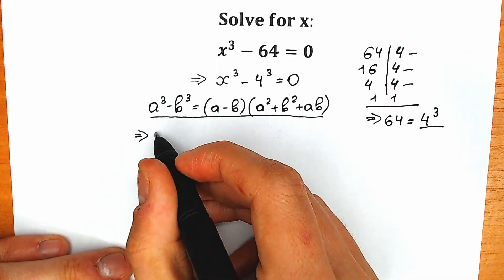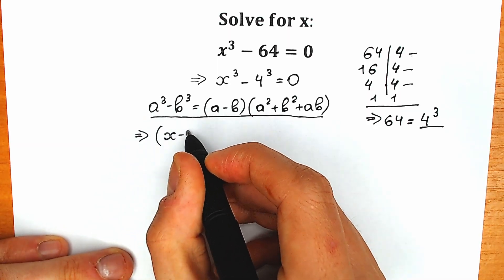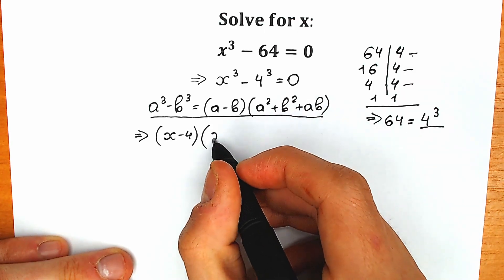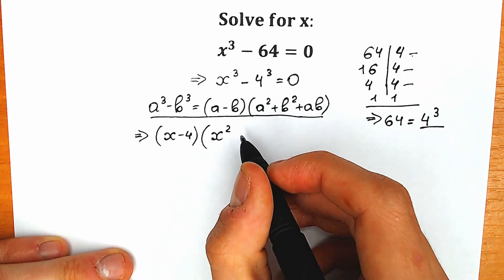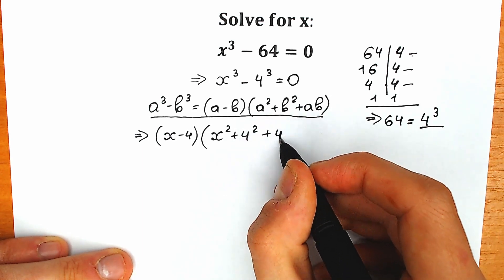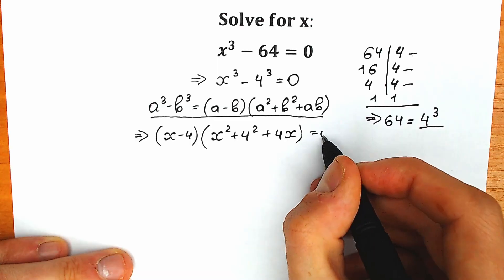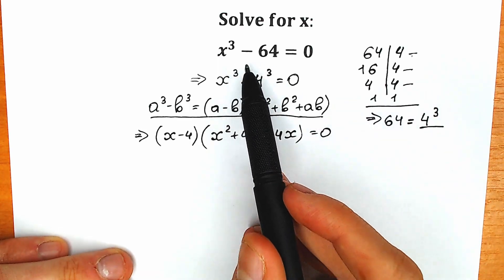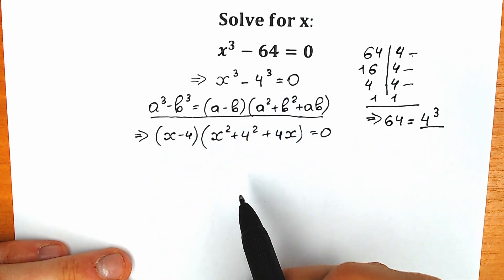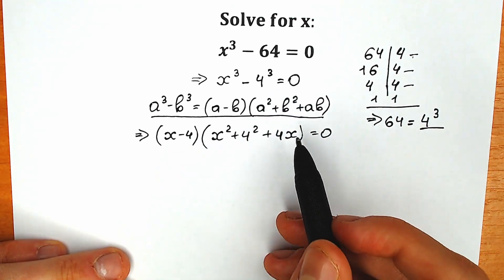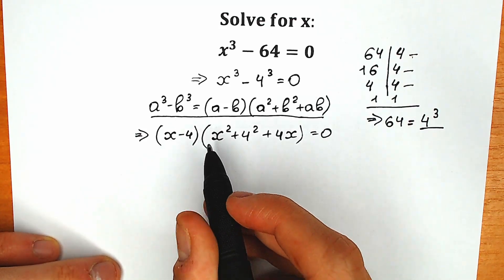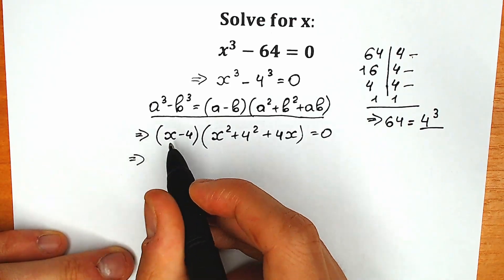As a result we have (x minus 4) in the first parenthesis, and in another parenthesis we have x-square plus 4x plus 4-square. Right now we have a product of two parentheses equal to zero. A product of two parentheses is equal to zero when the first parenthesis is equal to zero.